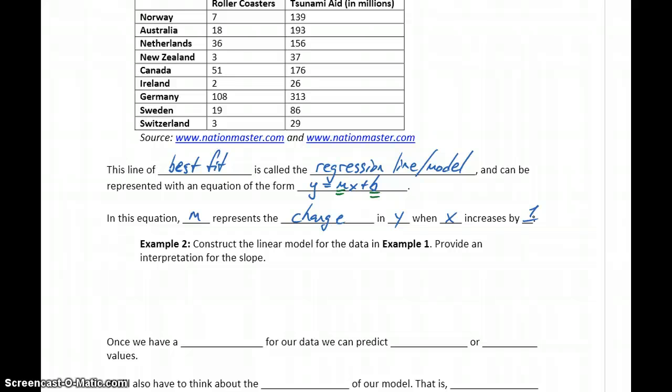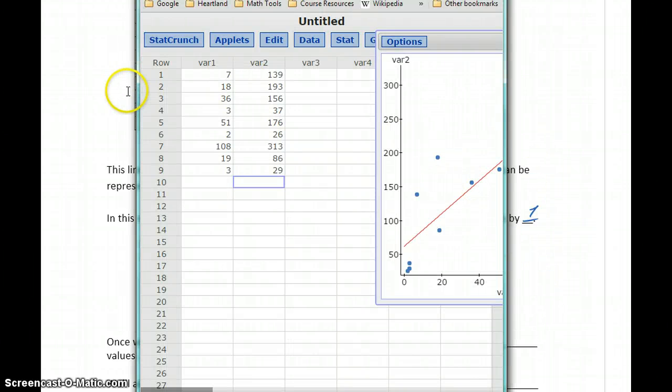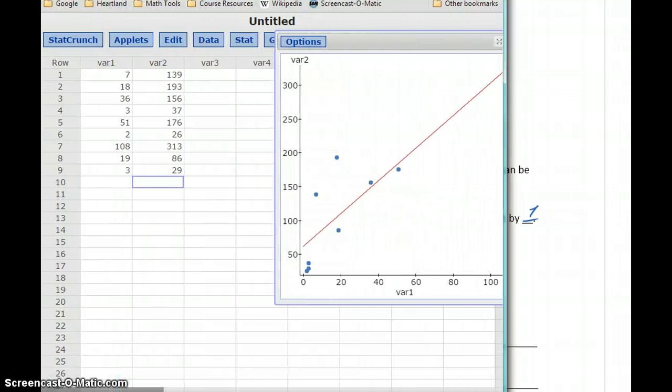So we've already looked at constructing that line of best fit. Now we actually want to construct the linear model. So we actually want the equation in slope intercept form, and then provide an interpretation for the slope.